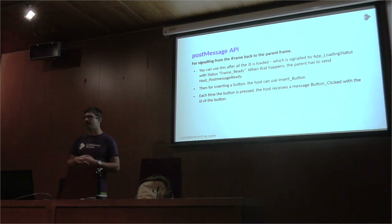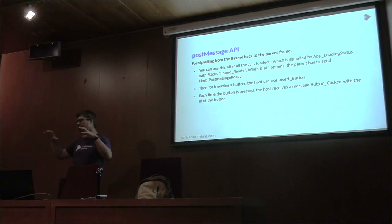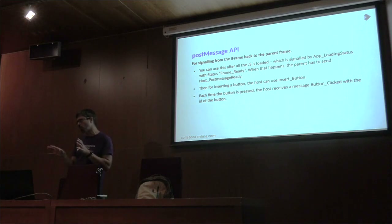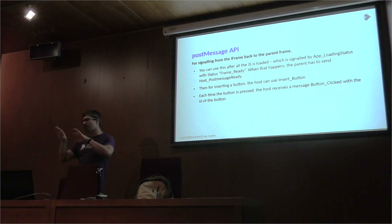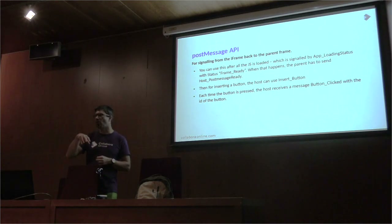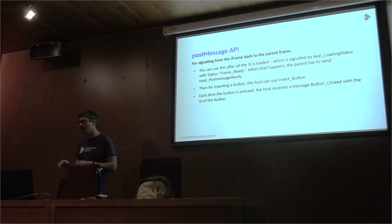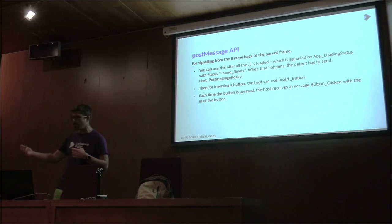For example, for save-as, you first get a message that your integration should show a save-as dialogue for the user to specify the name. When the user specifies the name, the integration has to call back with another post message indicating that the user has provided the name. Then in the online we get this name and finally perform the save-as.